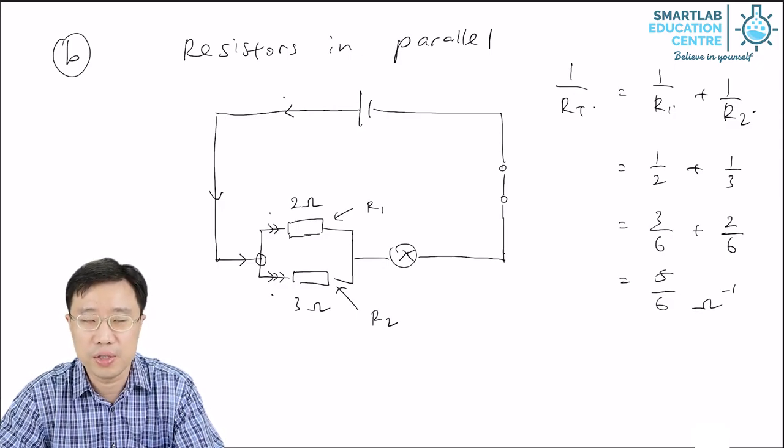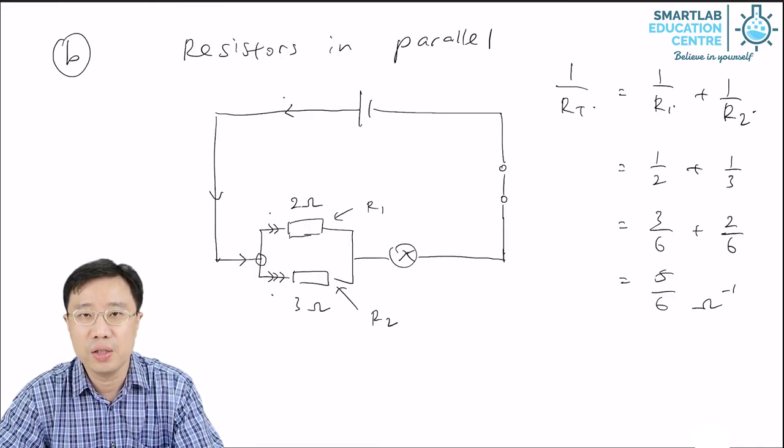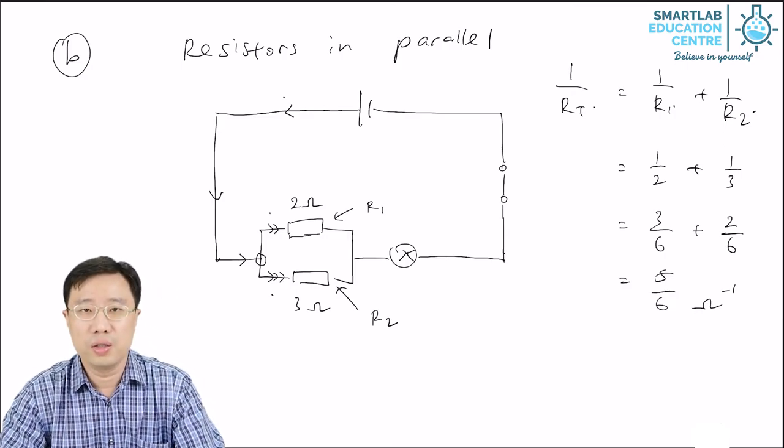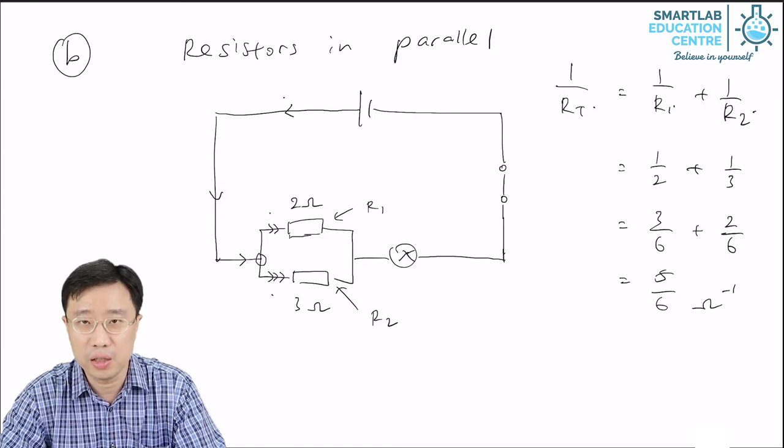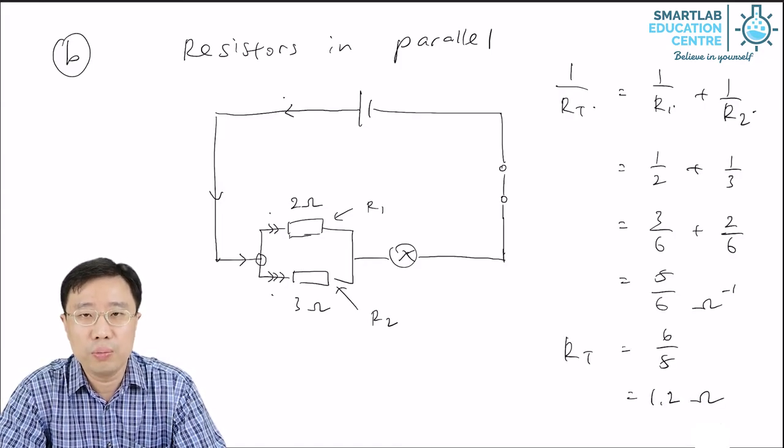Because the unit for resistance is Ohm, 1 over the total resistance, so 1 over resistance, the unit is per Ohm. This is not the final answer. The final answer is Rt. As you can see, Rt is equal to 1.2 Ohm.